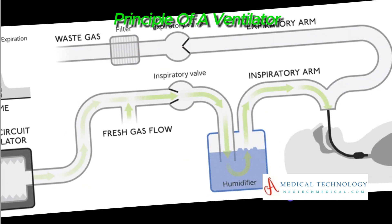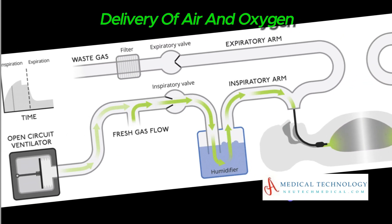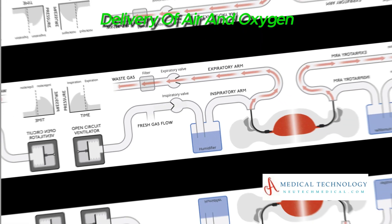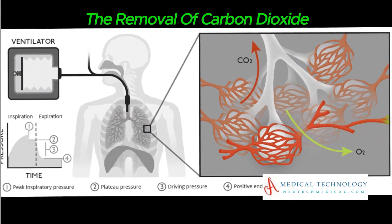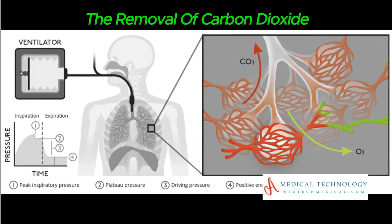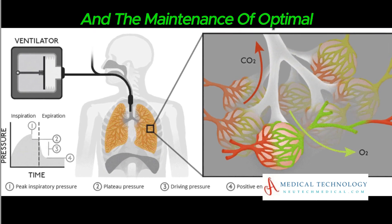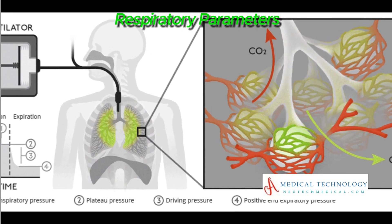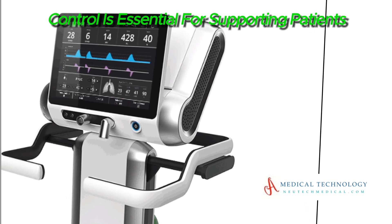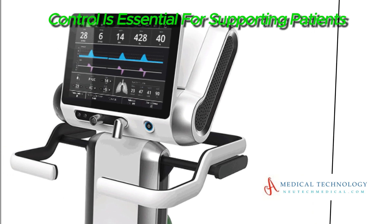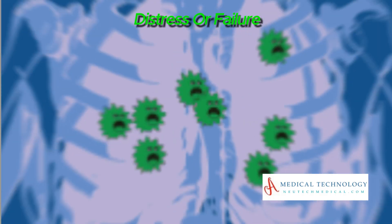In summary, the working principle of a ventilator involves the controlled delivery of air and oxygen to the patient's lungs, the removal of carbon dioxide, and the maintenance of optimal respiratory parameters. This precise control is essential for supporting patients with respiratory distress or failure.